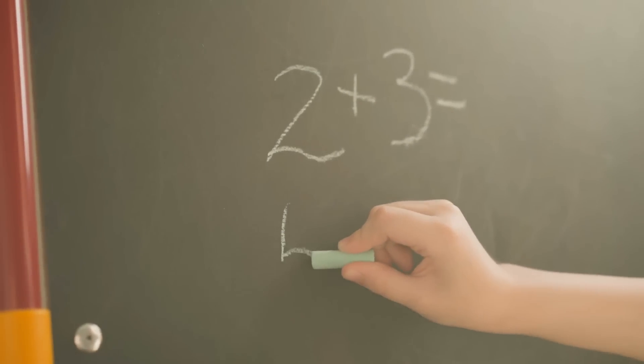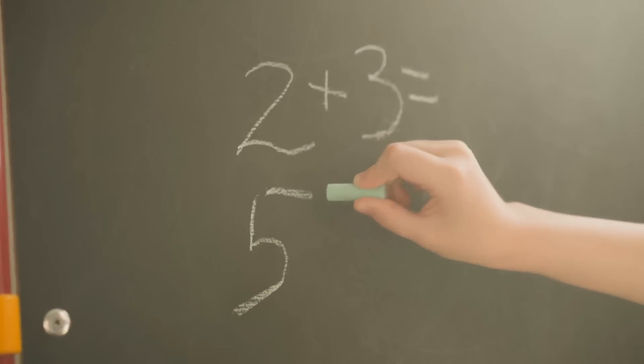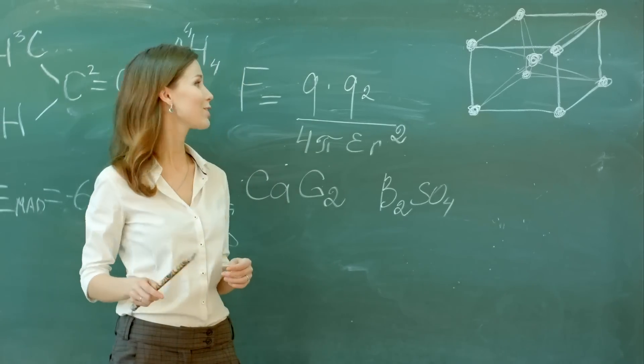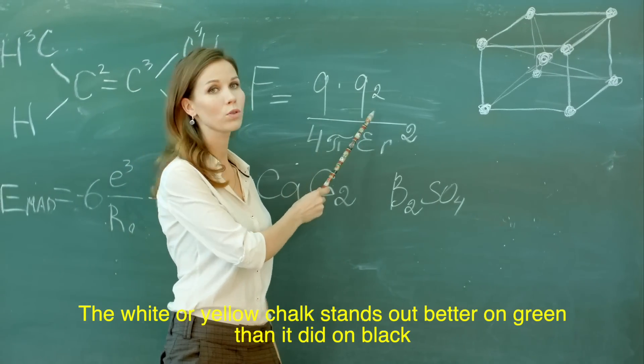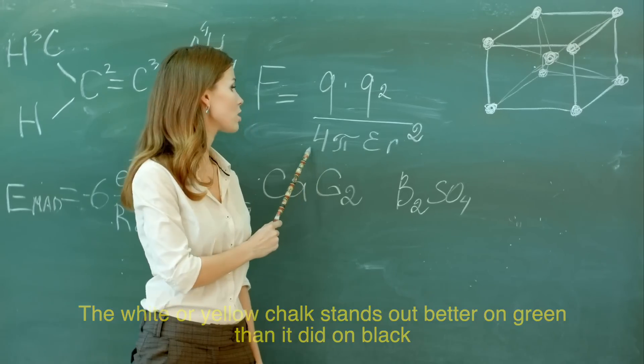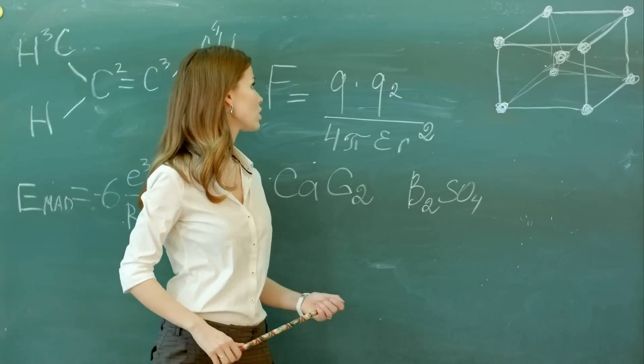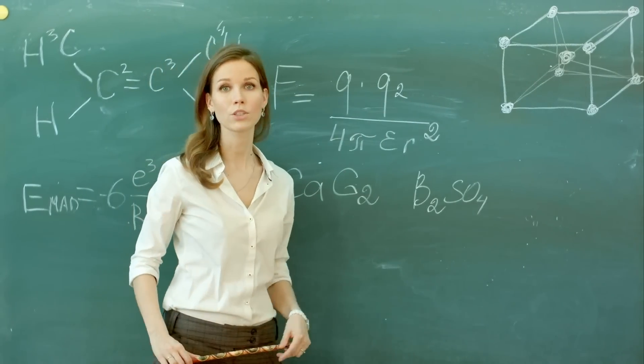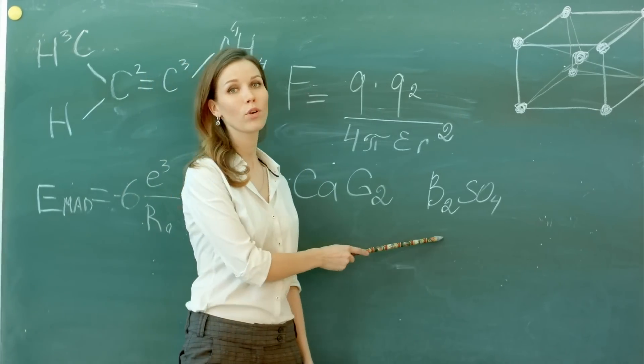Beyond reducing eye strain, green chalkboards offered other practical advantages, too. First, contrast matters. The white or yellow chalk stands out better on green than it did on black. Teachers found that writing on a green surface made their words clearer and easier to read, even from the back of the classroom. This was particularly important in larger classrooms, where visibility could be an issue.